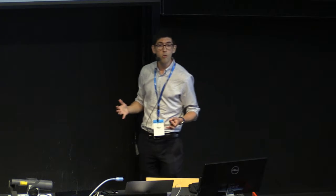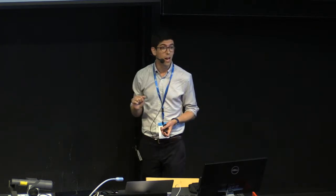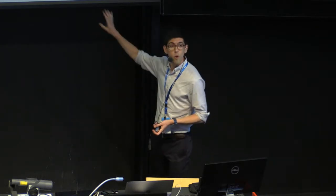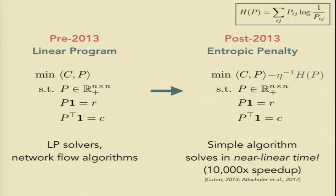because once you write this with the entropic penalty, what's magical about this new thing is that if you write down the KKT conditions, there's actually a simple iterative algorithm that suggests itself to solve the problem on the right. And that algorithm has actually been shown to converge in near-linear time. This is a really fast approach. And in Couturi's original paper, he actually showed that it gave a 10,000 times speedup over the LP approach.